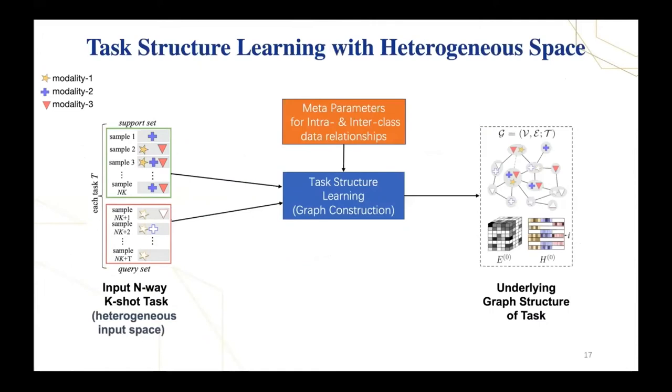More specifically, in the first module, we construct an initial graph structure where each node is a multimodal or unimodal sample and each edge represents the semantic similarity between samples. The input is all samples in the support and query set. The output is a heterogeneous graph consisting of node features and edge features.